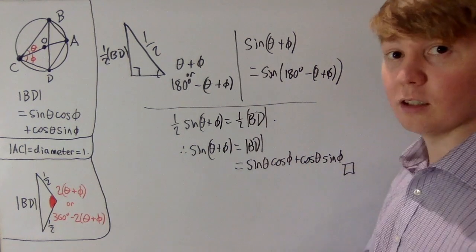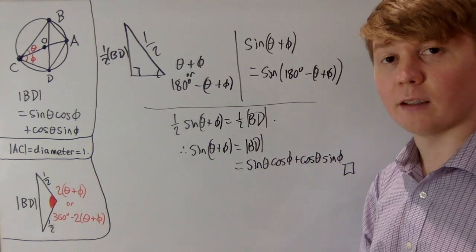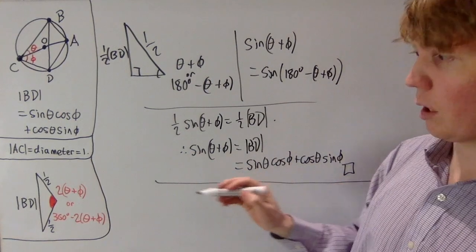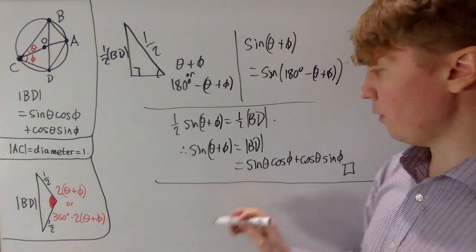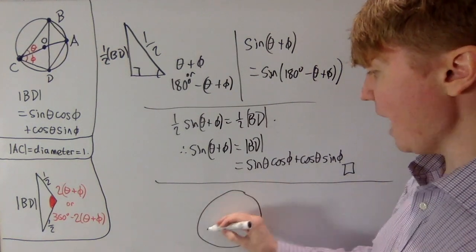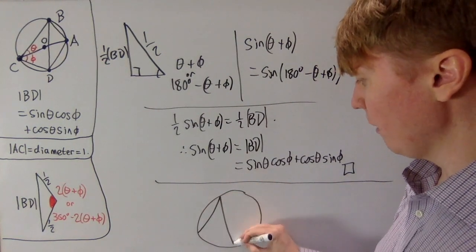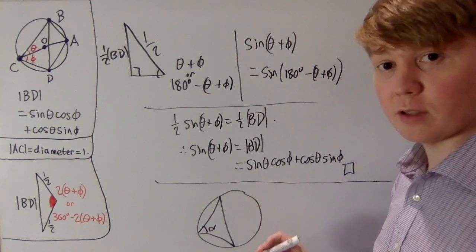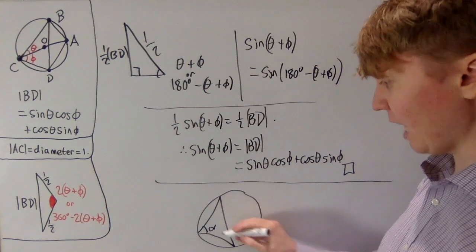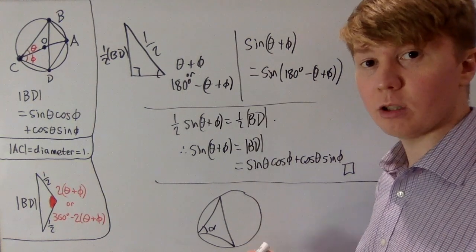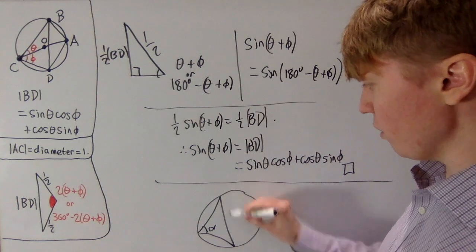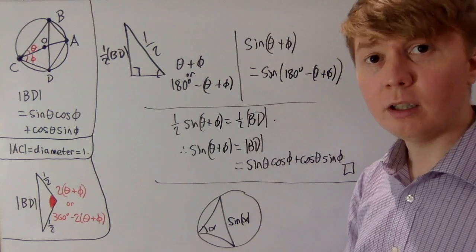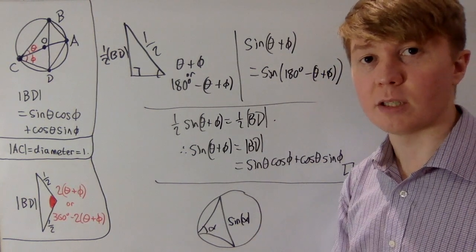Along the way, we've established a useful lemma: replacing theta plus phi with any angle alpha between 0 and 180 degrees, the chord length corresponding to that inscribed angle equals sine alpha. We'll use this lemma now to prove the angle difference formula for sine.